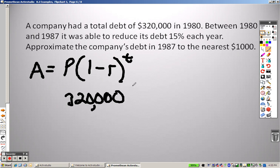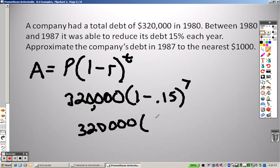The debt was $320,000, and 1 minus, they're reducing it by 15% each year. So we want to now approximate the company's debt in 1987. So in 1987, that means it was seven years that it took for all this to happen. So $320,000, and that gives me 0.85 to the seventh. So let's see what we get.